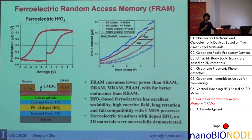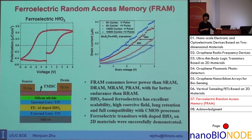Traditionally, ferroelectric memory was built using complex perovskites like PZT or SBT. However, these materials have two problems: first, they are not compatible with CMOS fabrication; second, they are difficult to scale since they are usually deposited by spin-on processes, giving a thickness limitation below which ferroelectricity disappears.